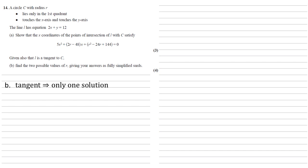So thinking of our quadratic formula, if there's only one solution, then the b squared minus 4ac part must be equal to 0, where the a is the 5, b is the 2r minus 48, and the c is the r squared minus 24r plus 144 part. So putting those into that equation gives us that 2r minus 48 all squared minus 4 times 5 times r squared minus 24r plus 144 is equal to 0.